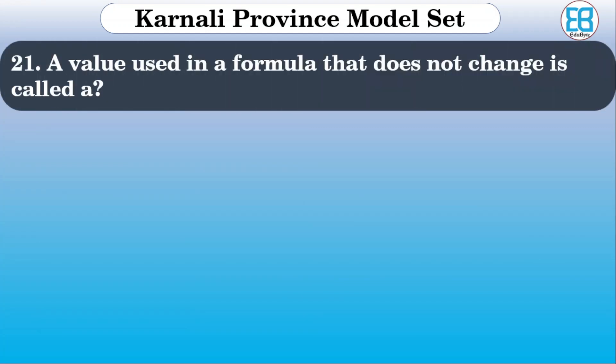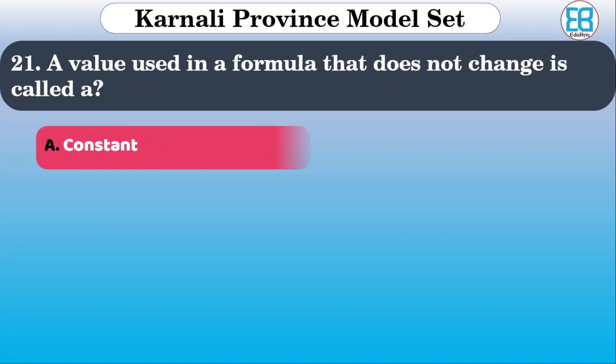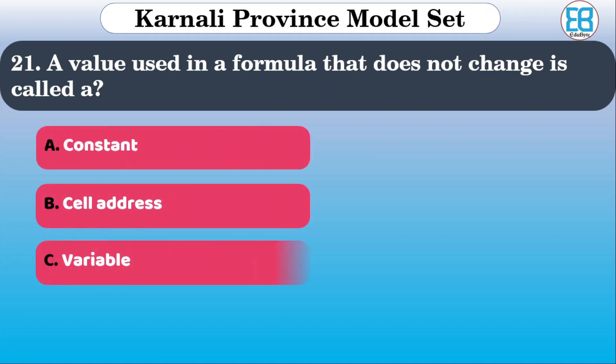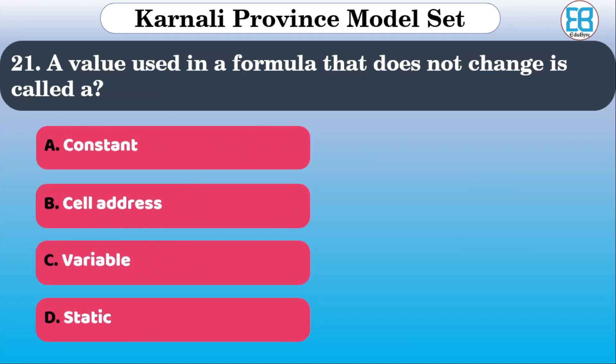A value used in a formula that does not change is called what? The options are: constant, cell address, variable, static. The correct option is constant.